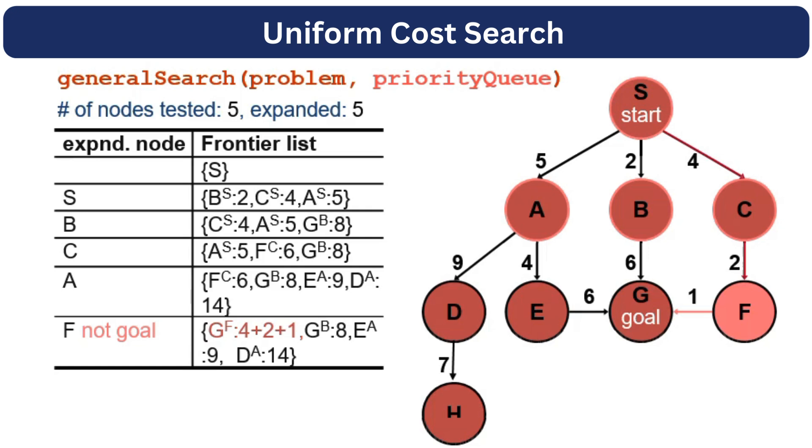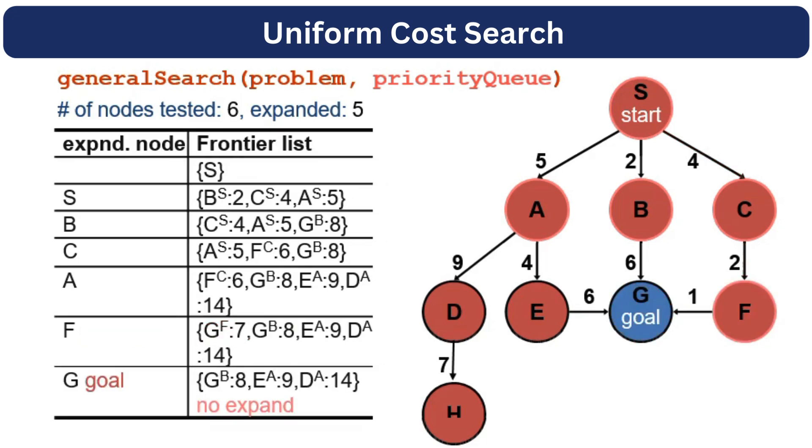So this time the cost of G is 4 plus 2 plus 1, which is lesser than the previously explored G node from the B node. Now the node with the least cost is G node. We will dequeue it, check if it is a goal node or not. But yes, it is a goal node.